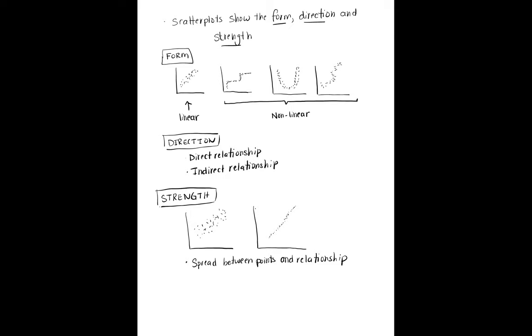Finally, the strength of a relationship can be viewed as the spread between the points and the relationship line. So if you look at the graph here on the left, the scatter plot,